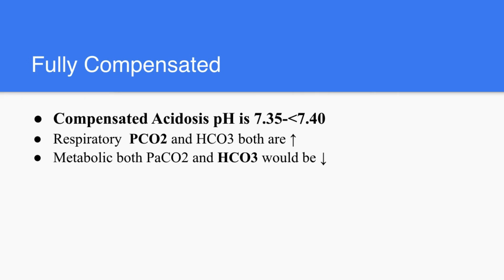In fully compensated acidosis, the pH would be 7.35 or more, but usually it doesn't exceed 7.40. If it's respiratory, the main problem would be the PaCO2, which would be high, and you would find the bicarb also is high. In metabolic acidosis that is compensated, the pH is still going to be between 7.35 to 7.4, and the bicarb — the main problem — would be low. If there's compensation, then the PaCO2 would be low also, because carbon dioxide needs to be washed out to compensate for the acidosis.